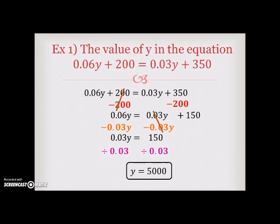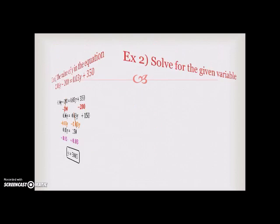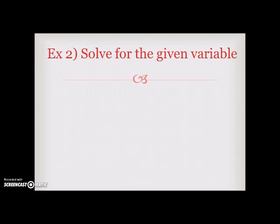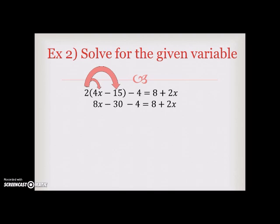Now let's move on to example two. Here we are going to solve for the given variable. We have the equation 2 times 4x minus 15 minus 4 is equal to 8 plus 2x. The first thing we are going to do here is to distribute. Due to the fact that there are parentheses, we first want to get rid of all parentheses. 2 times 4x will give us 8x. And 2 times negative 15 will give us negative 30.